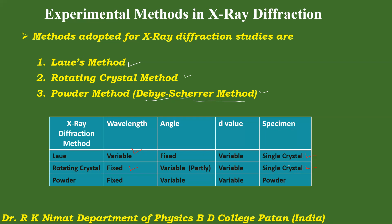The third method is the powder method. The specimen whose crystal structure is to be determined is taken in the form of powder and placed in the path of monochromatic X-rays. Here λ is fixed, while θ is variable because each grain of the powder acts as a single crystal with different values of θ. Since there are a large number of planes, D also varies. A large number of small crystallites with different orientations are exposed to X-rays, and Bragg's reflection occurs for certain values of d, θ, and λ satisfying Bragg's condition.